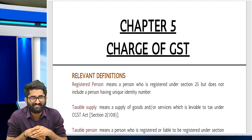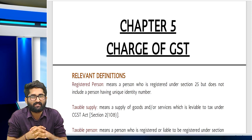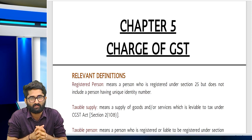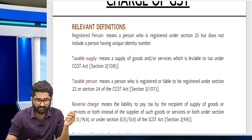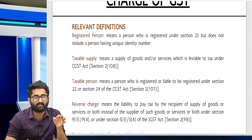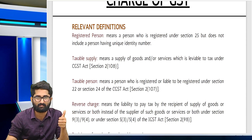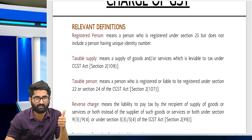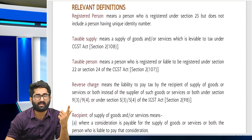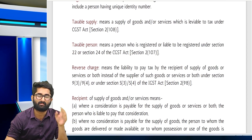In this episode we will be discussing the charge of GST, Chapter 5 revision. We will go for revision of charge of GST. There are some relevant definitions: registered person means a person registered under section 25, excluding UIN holders. Taxable supply means a supply on which tax is leviable. Taxable person means who is taxable under section 22 and 24.